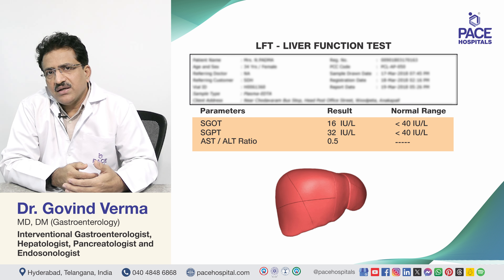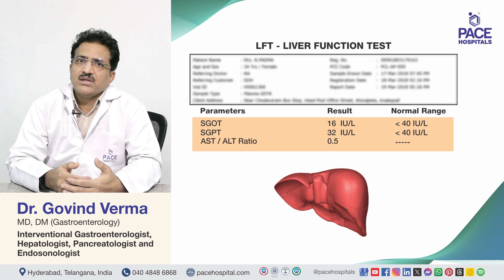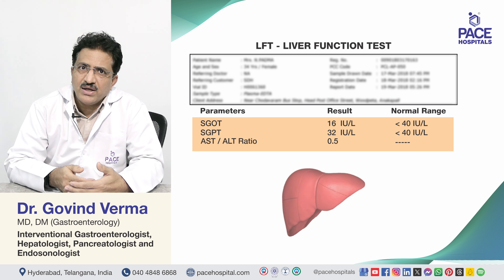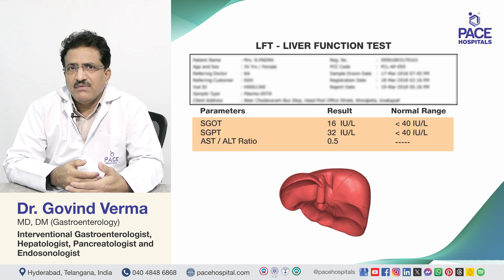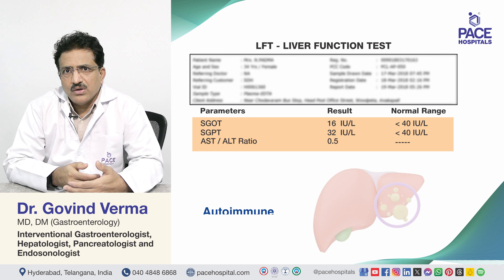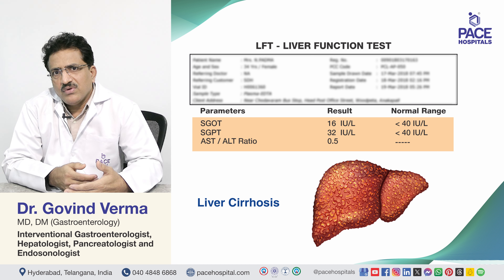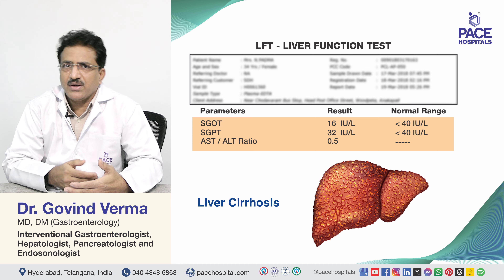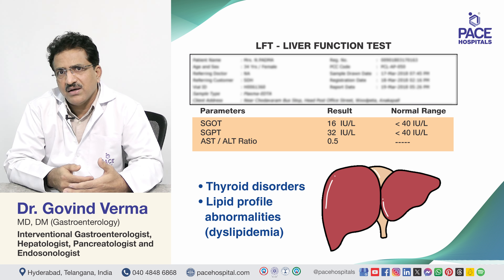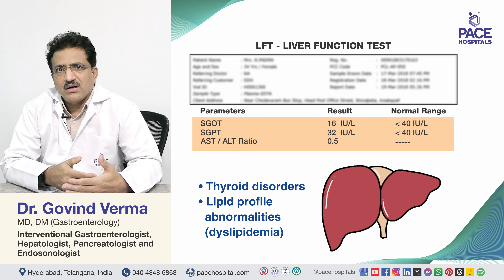The level of enzyme elevation also gives clues about etiology. SGPT and SGOT elevated around 4 to 5 times suggests non-alcoholic steatohepatitis, fatty liver disease, autoimmune liver disease, or sometimes cirrhosis. Elevated SGPT and SGOT can also be seen in thyroid disorders and dyslipidemia, typically giving elevations around 4 to 6 times baseline.